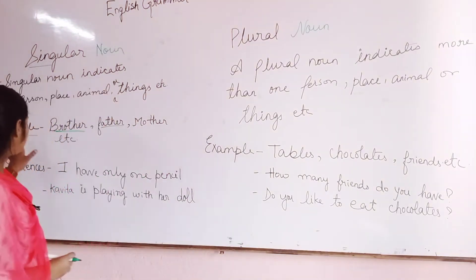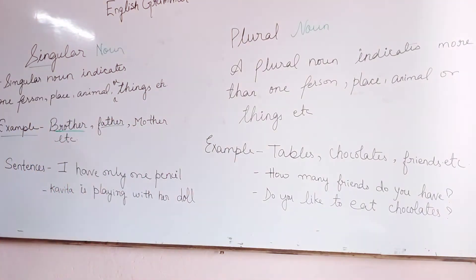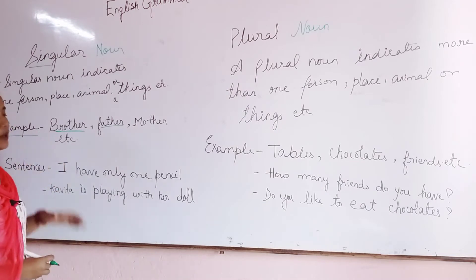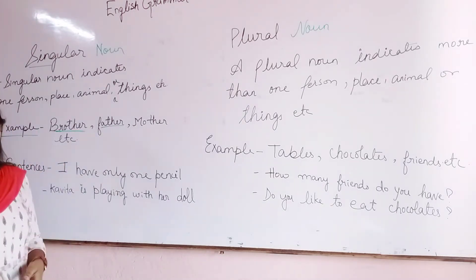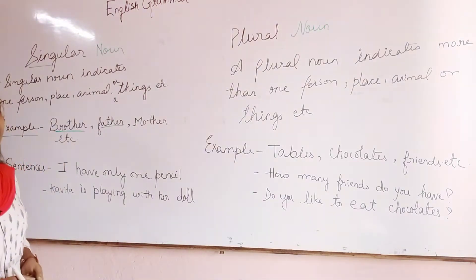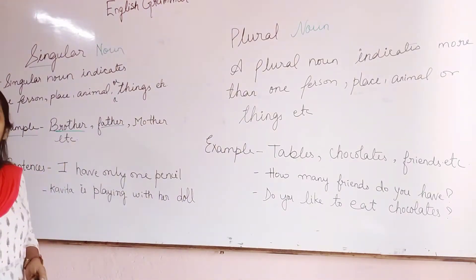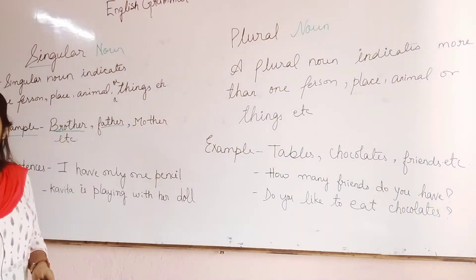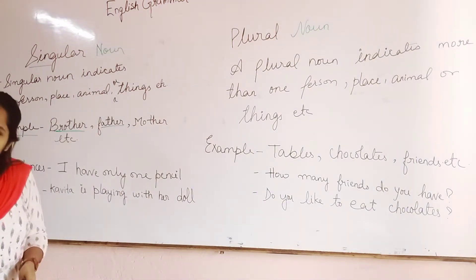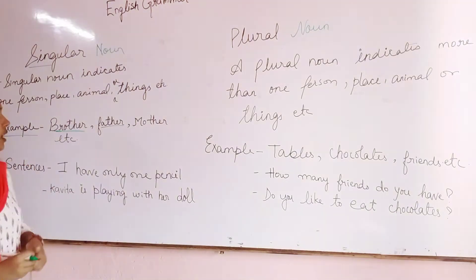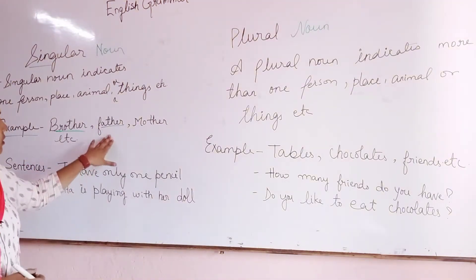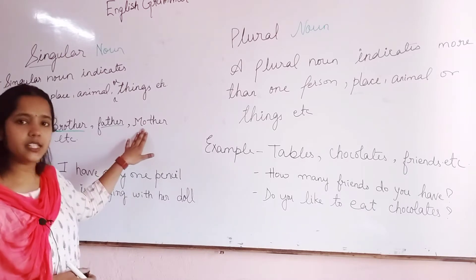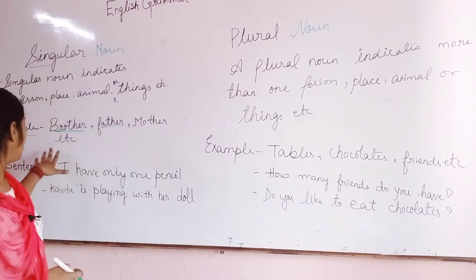Let us discuss with examples. For example, brother — if you have only one brother, then it becomes a singular noun. Father — singular noun. Mother — singular noun.